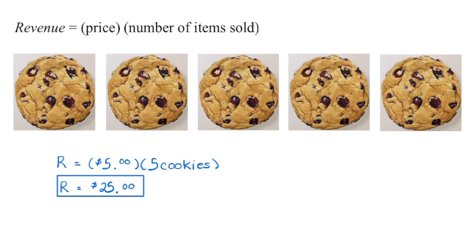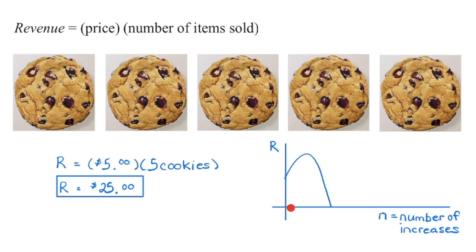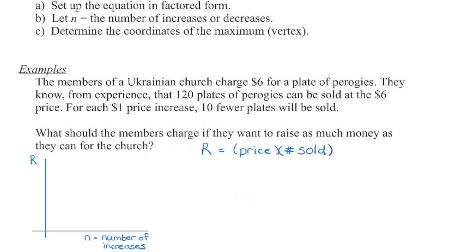To bring in more revenue, we either sell more items or increase the price. But if we increase the price too high, fewer people will buy and revenue will fall. The goal as a business owner is to maximize revenue. Knowing that price impacts the number of items sold, we can use quadratics to determine the maximum y-coordinate. Because revenue depends on both price and number sold, anytime we see a revenue question we're going to use factored form — one factor representing price, the other representing number sold.